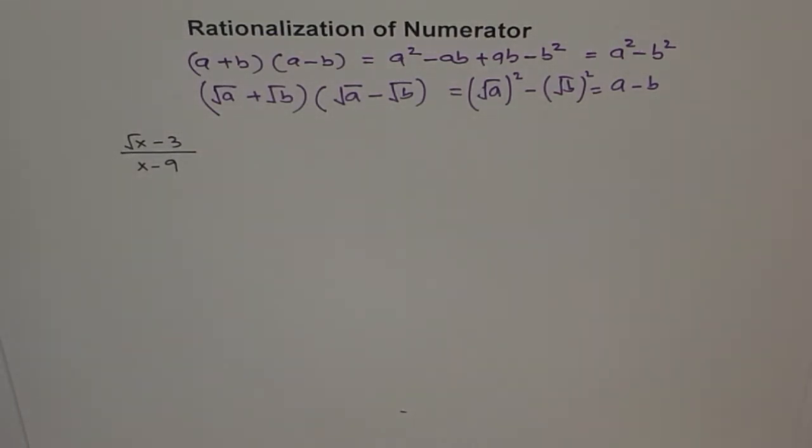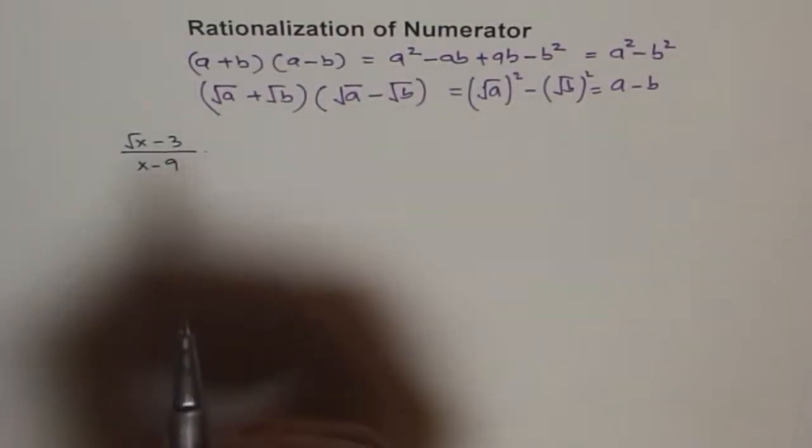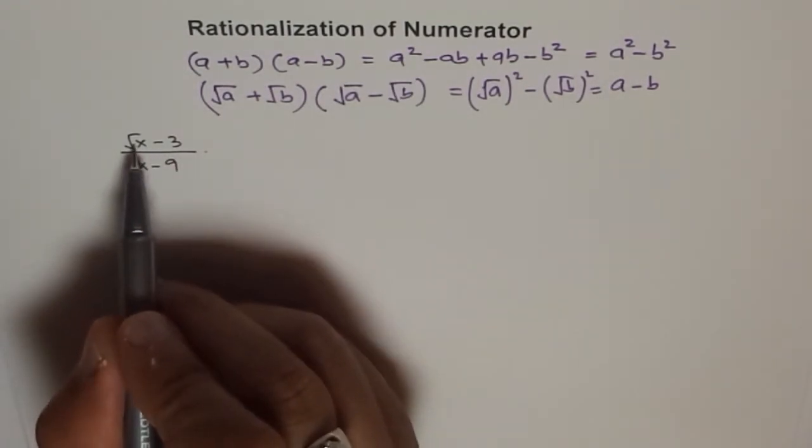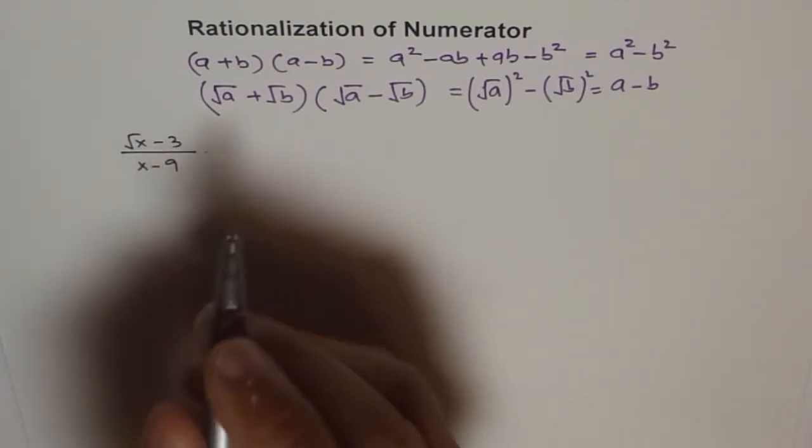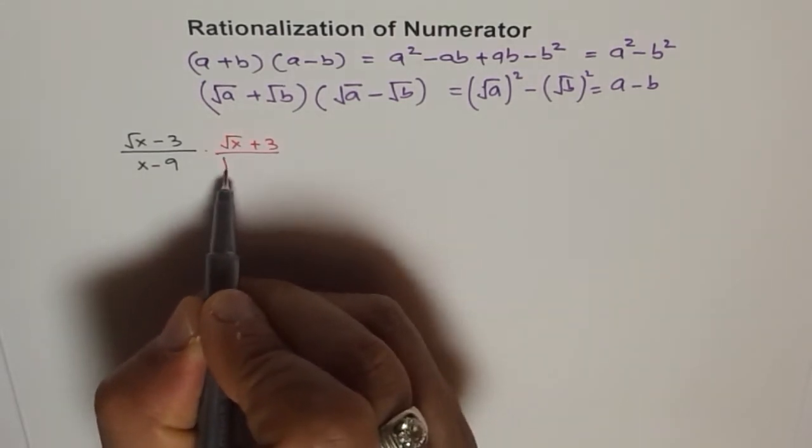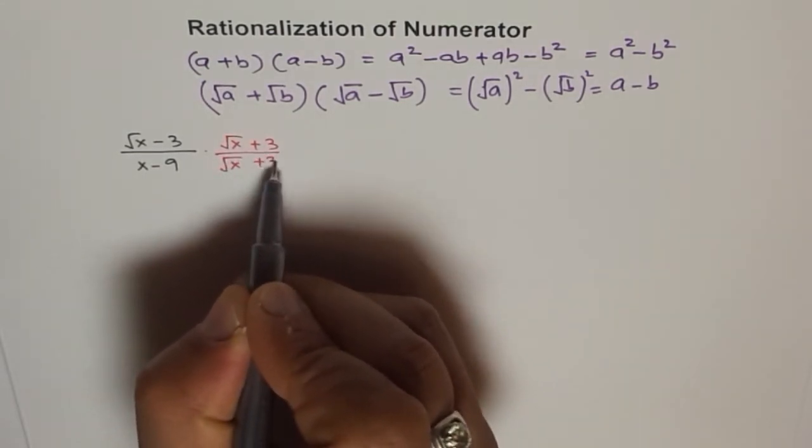So to rationalize, we'll multiply and divide by the conjugate. And the radical is in the numerator, so it makes sense to rationalize the numerator. So we do square root of x plus 3 over square root of x plus 3.